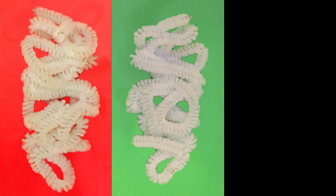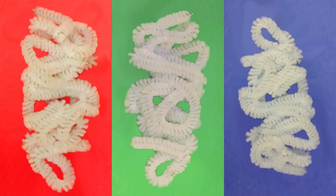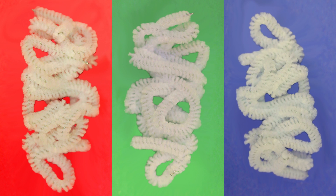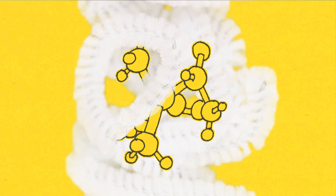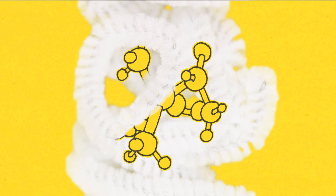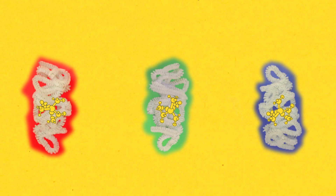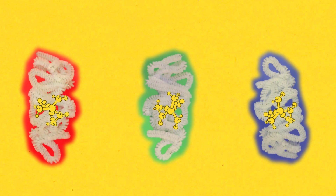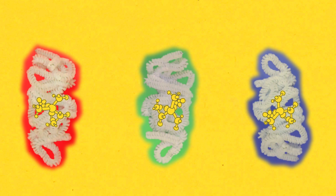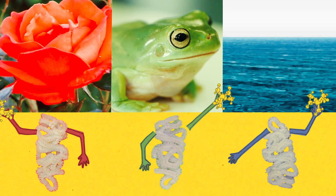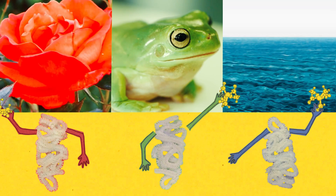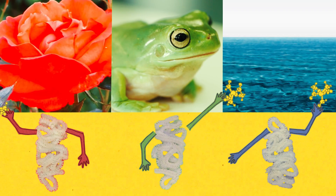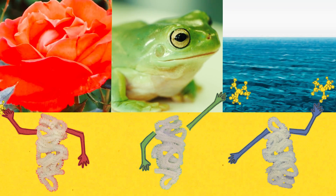There's a red opsin protein, a green opsin protein, and a blue opsin protein. This protein has a little molecule in it called retinal. The opsins are all programmed, so to speak, to toss out the retinal when they're hit by a specific wavelength of light.